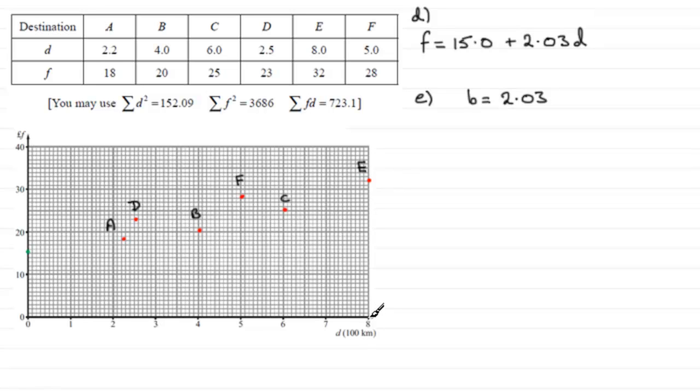So what I'm going to do is go right to the end here and substitute D equals 8 into there. So if you were to do 15 plus 2.03 times 8, you'd get 31.24.